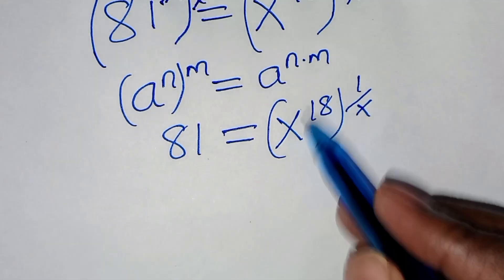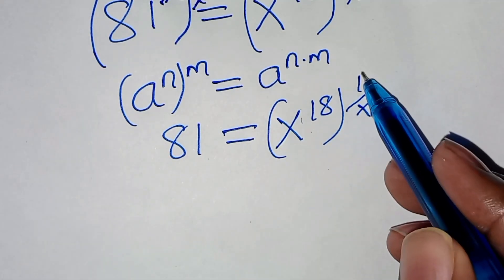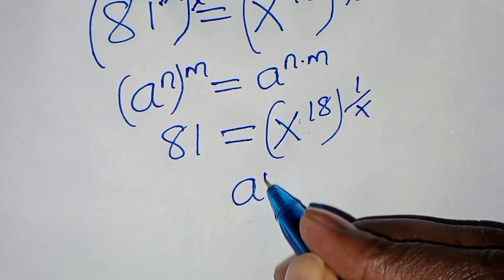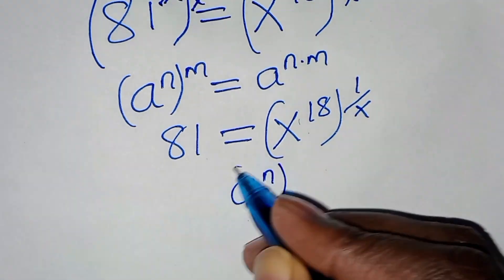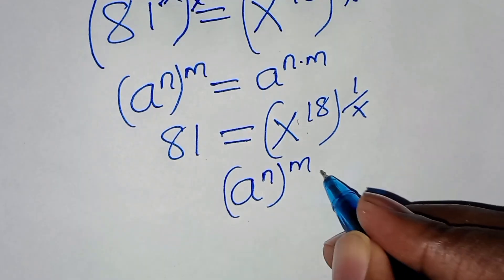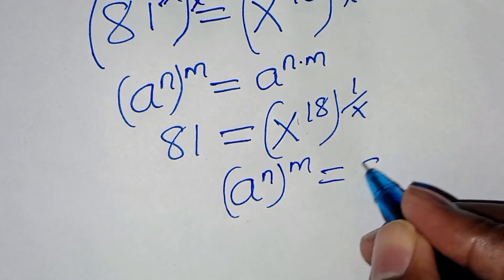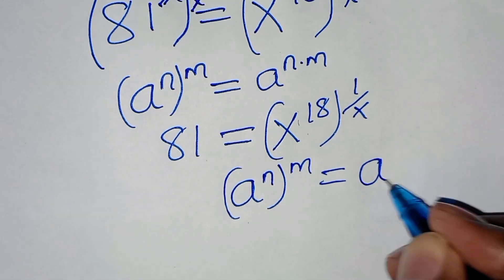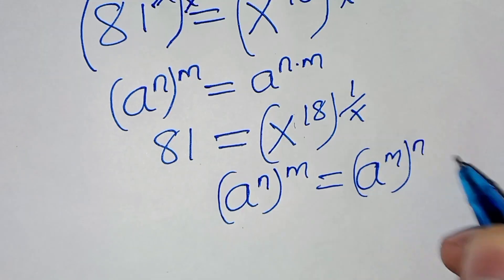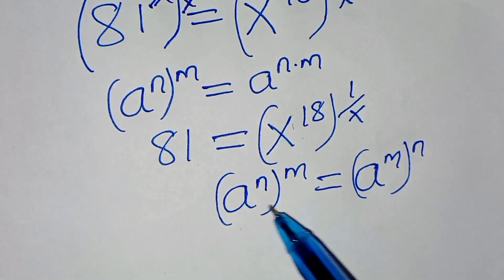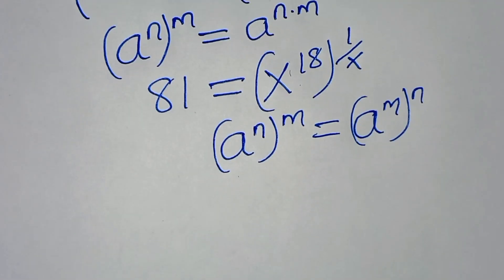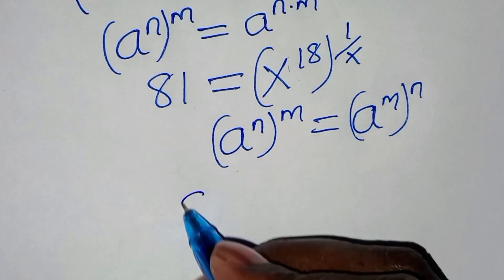x to the power 18, multiplying by 1 over x, is in the form of a to the power n raised to the power m, which we can express as a to the power m raised to the power n. Applying this exponent property, we have 81.